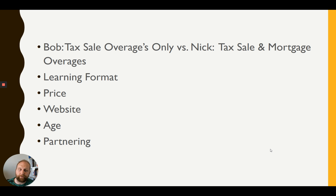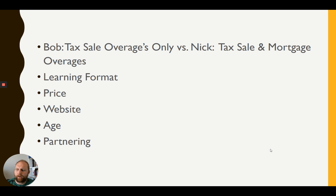Fifth, let's talk about age. I believe Bob's course came out around 2013 — I bought it in 2015. From what I've heard it hasn't changed too much since then; there's even mention of MySpace for skip tracing, which a lot of people don't use anymore. My course came out in the fall of 2019, so it's very up to date. I have a 50-state guide covering the different laws for both tax sales and mortgage overages.